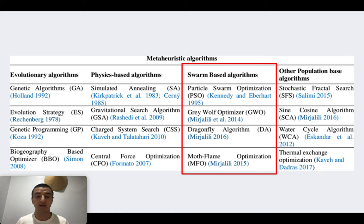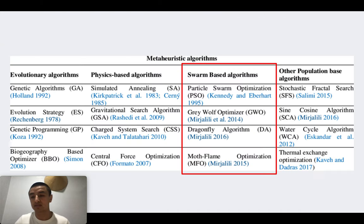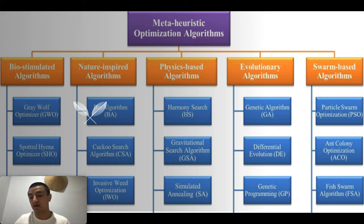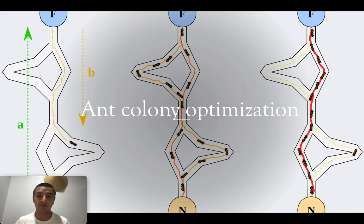I wanted to understand the algorithm my advisor had asked me to read about, so I started reading papers about swarm-based algorithms. I began with PSO — particle swarm optimization — and then read about ACO — ant colony optimization. I read a lot of papers about these algorithms and was fascinated. I really liked them because they're easy to understand, easy to implement, and there's a lot of research on them.